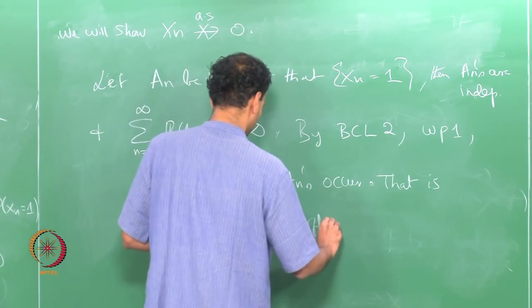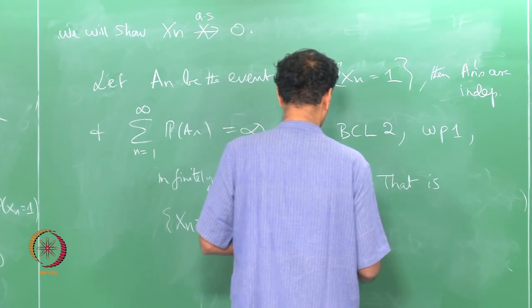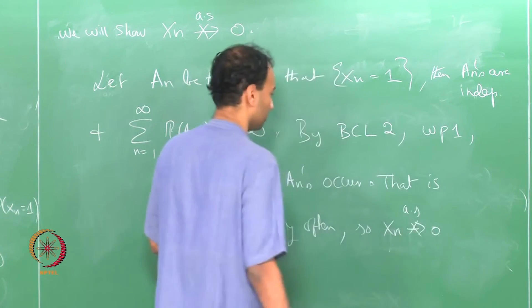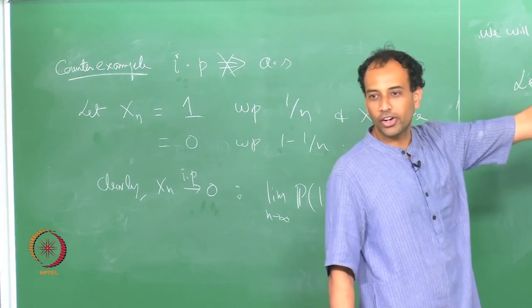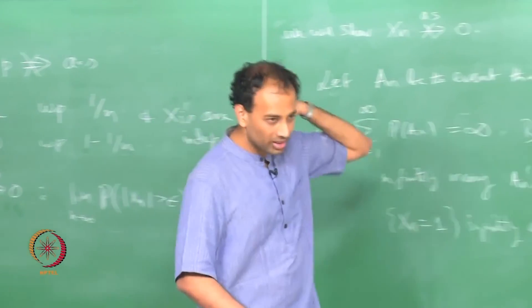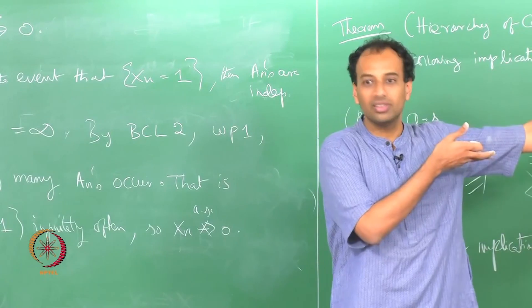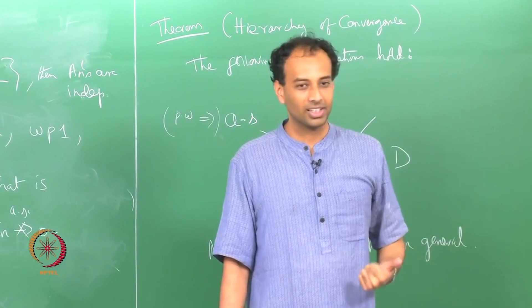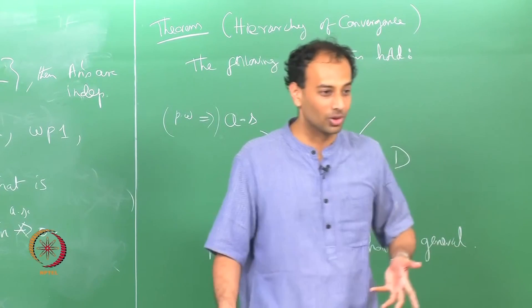So X_n equals 1 infinitely often, which means X_n does not go to 0 almost surely. Think of these as coin tosses: the nth coin coming up heads has probability 1/n. No matter how far out you go, Borel-Cantelli says there will be occasional heads popping off. So the event that X_n → 0 has probability 0.